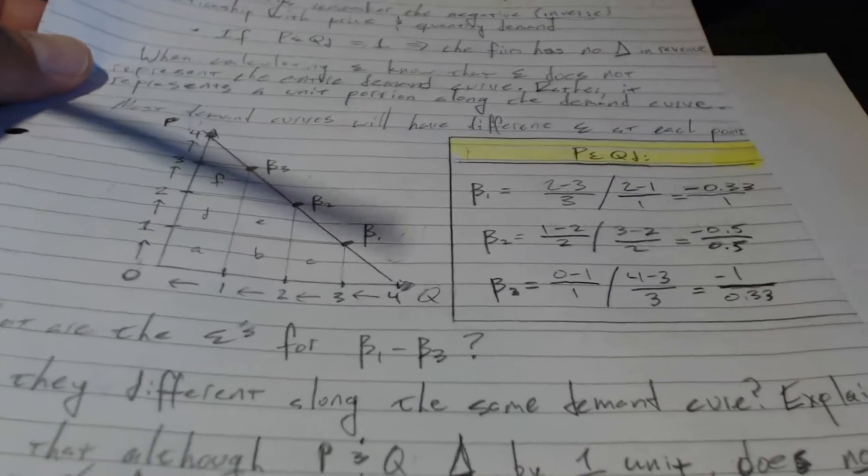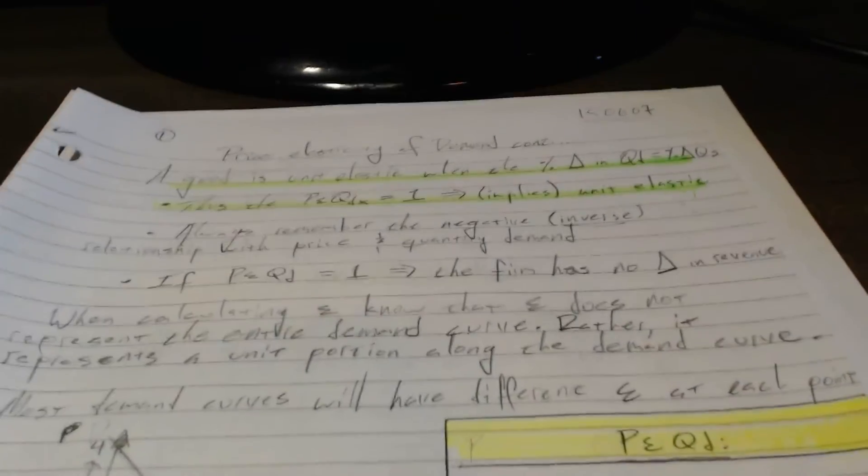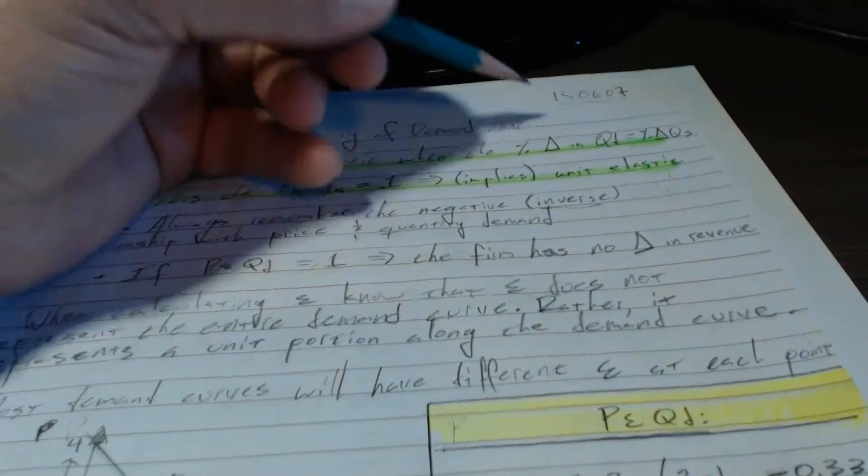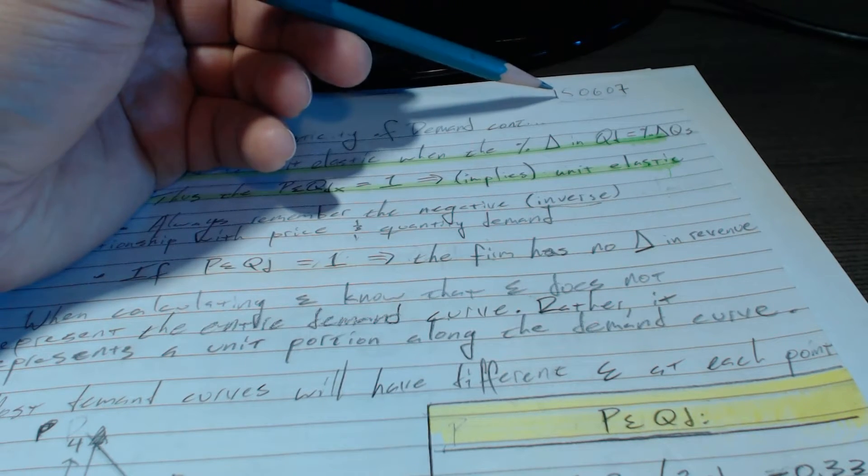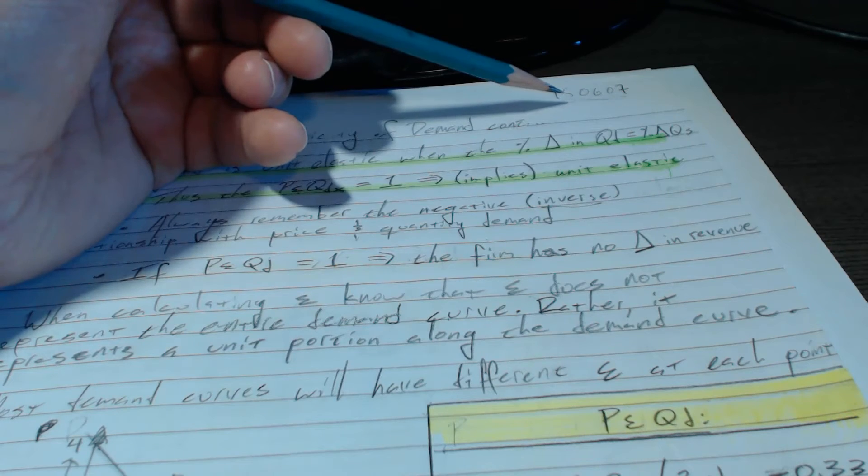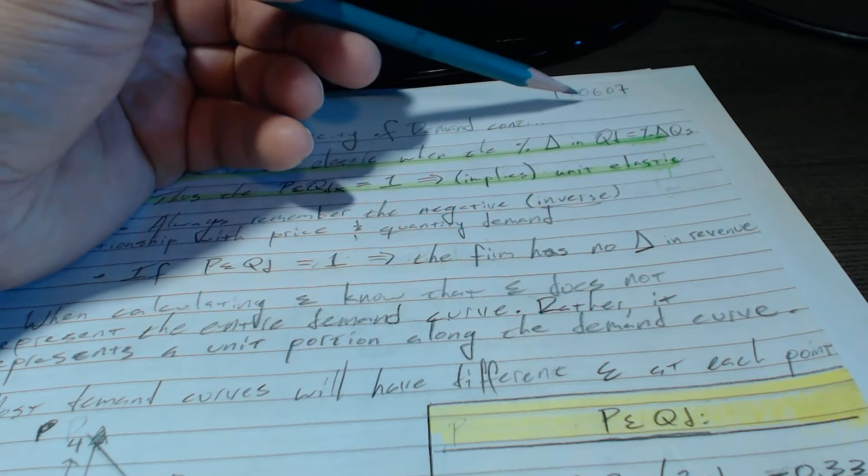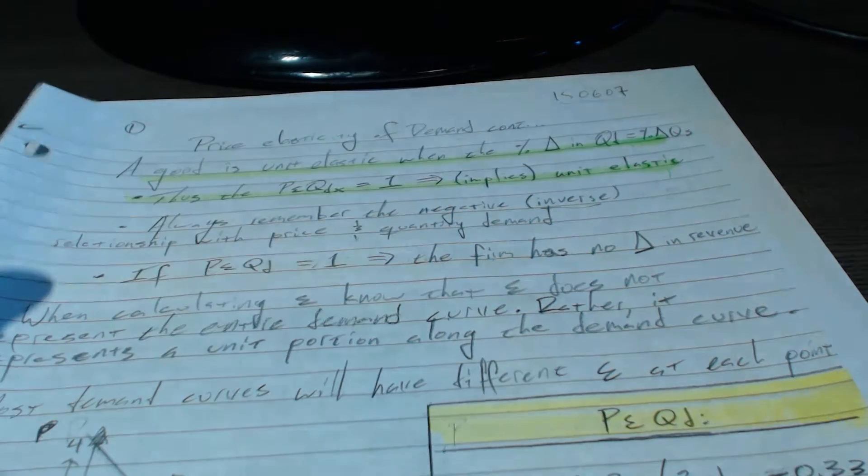All right, so the first question is with respect to the lectures we covered around January 6th or 7th. If you're wondering, it is here on your notes. If you look on the upper right-hand corner, you'll see 150607. My little coding system, I made a mistake that day, but if you see that number, that's the notes we're referring to. It's probably the 6th or the 7th of January, okay?